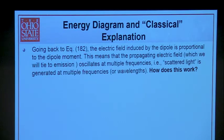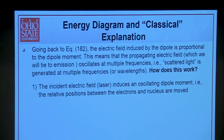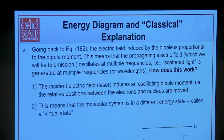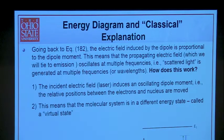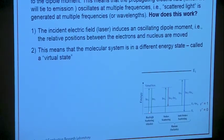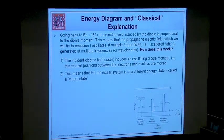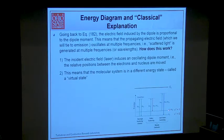Let's look at a diagram and think about how this works. Step one: the incident field — our laser — induces an oscillating dipole. When we say we have an oscillating dipole, the relative positions between the electrons and the nucleus are moved. This means the molecular system is in a different energy state — what's referred to as a virtual state. We have excitation from the ground state up to this virtual state, and then different processes back down.